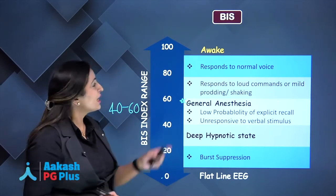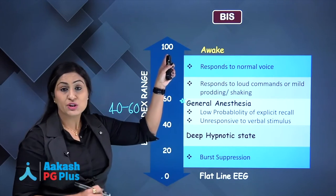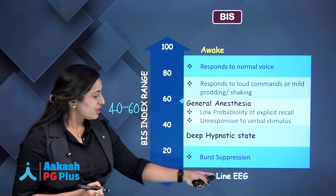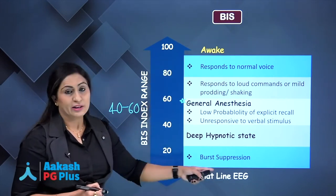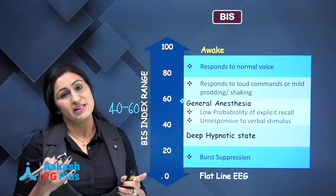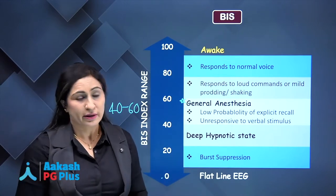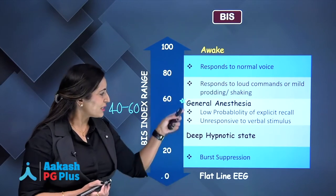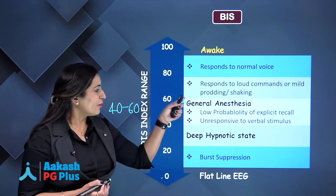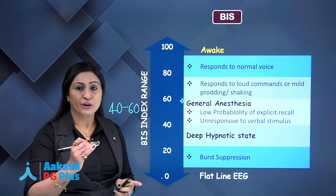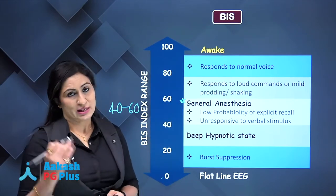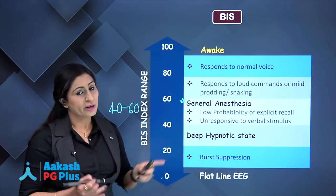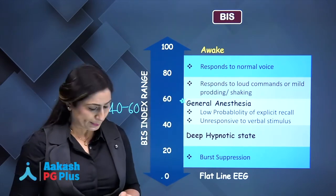A BIS of 100 means the patient is totally awake, and 0 means the EEG is flat-line — the patient is deeply sedated. We want to maintain our patient between 40 to 60. A value of 60 to 80 is recommended for moderate sedation.